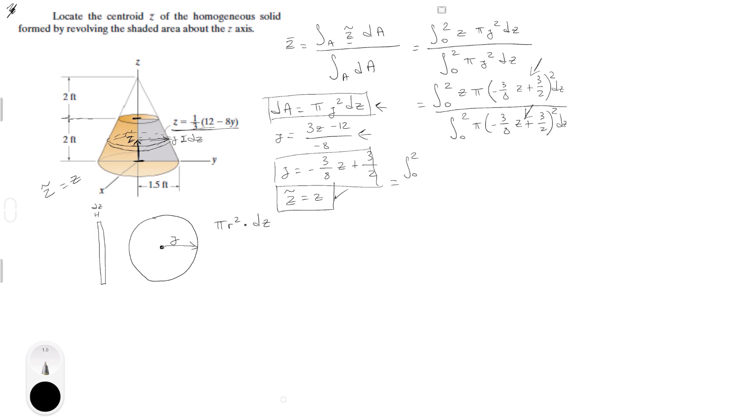Now, 0 to 2, C times pi, thus remains the same parenthesis. First one square is 9 over 64 C square. Now, 2 times the first one times the second one is minus 9 over 8C plus 9 over 4, which is the second one square, DC.